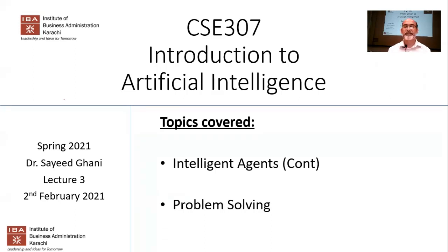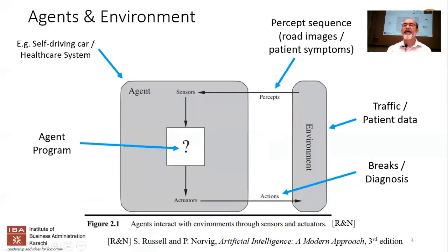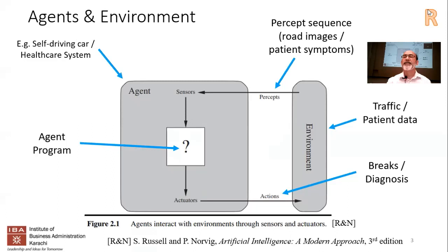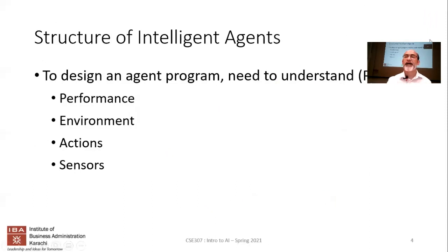Let's continue about intelligent agents. A small note: when you see a slide with an 'R' written at the back, it indicates a review slide. Generally at the beginning of lectures I have some review slides. This covers the agents and environment we already spoke about last time — I'm not going to go into the details of that.